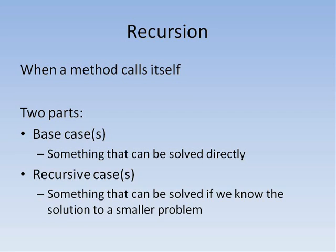In some sense, recursion is passing the buck. The method solves the problem by asking a different method — in this case another copy of itself — to solve most of it, and then finishes it off. This is called the recursive case. The reason this works is because the recursive case keeps pushing the problem closer and closer to a base case, a problem that can be solved directly.